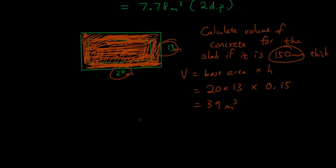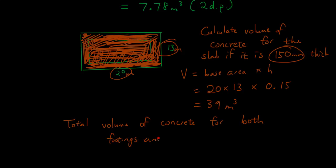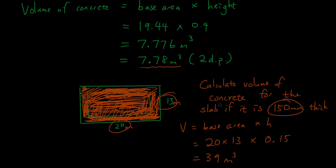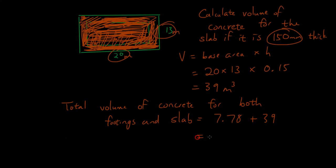So the total volume of concrete for both the footings and the slab is 7.78 meters cubed (footings) plus 39 meters cubed (slab), which equals 46.78 meters cubed. That is the total volume of concrete required to form the slab and footings of the house. Thanks for watching, see you next time!